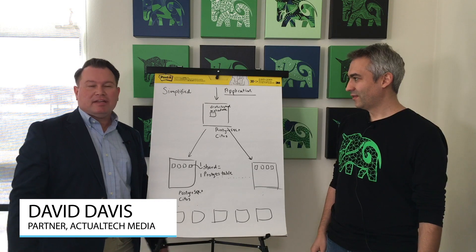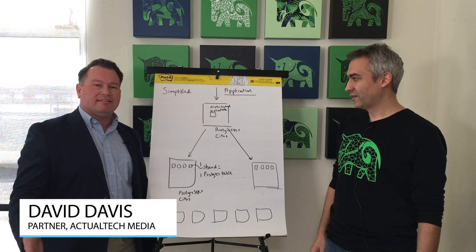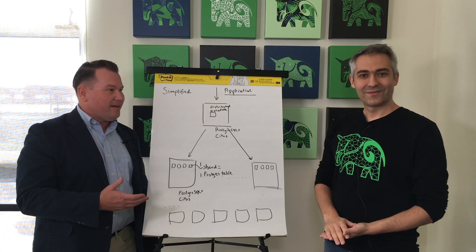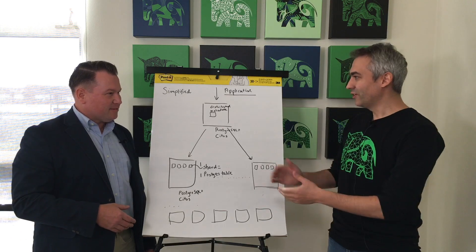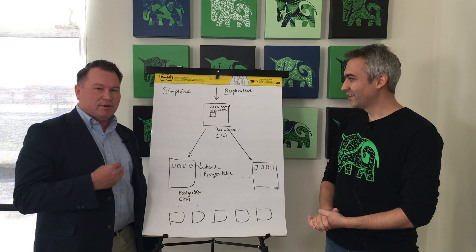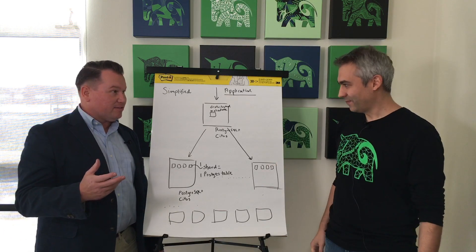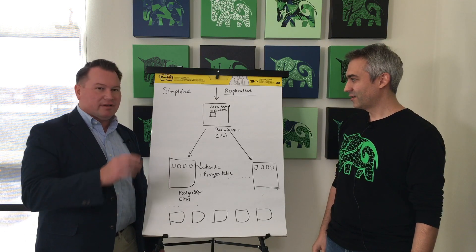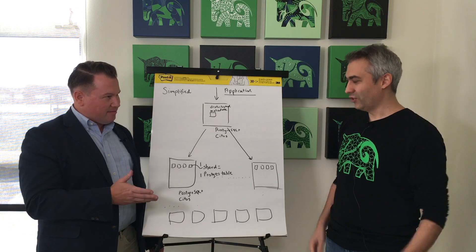Hi, I'm David Davis from Actual Tech Media. We're here at the headquarters of Citus Data. I'm joined by the founder and CTO, Mr. Asgun Erdogan. How are you doing, Asgun? Good, good. How about you? I'm doing great. So, I've learned that Citus is a database, it's open source, and it transforms Postgres to be a distributed database solution. Is that right? Yes, that's right.